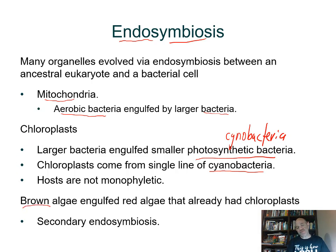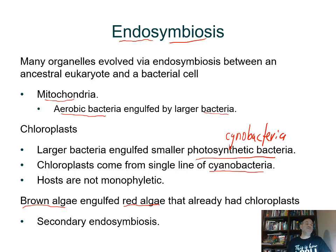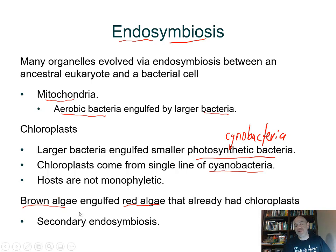Brown algae, which is also photosynthetic, seems to have taken in another eukaryote that already had a chloroplast. The evidence from comparing molecules of these organisms suggests that a red alga — which already had a chloroplast — was taken in by another larger cell. This is secondary endosymbiosis: the red alga had already gone through a primary endosymbiosis. The evidence comes from how many membranes surround the brown alga's chloroplast.